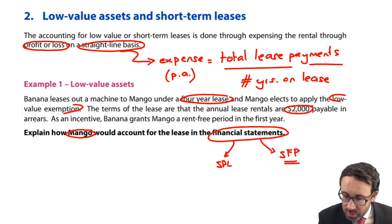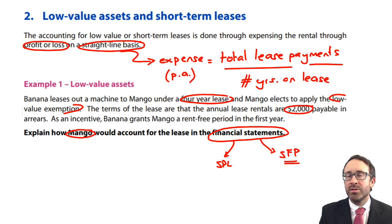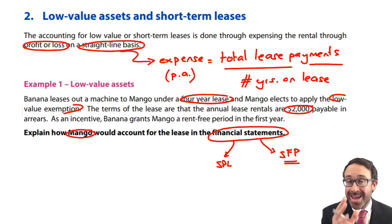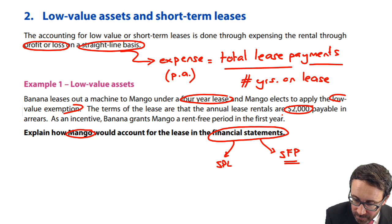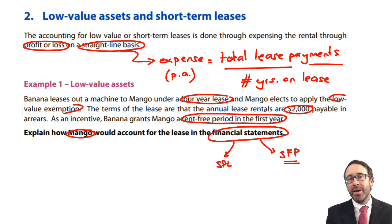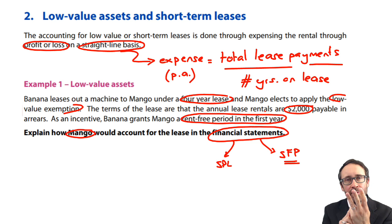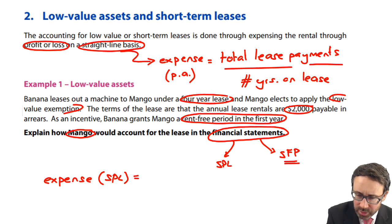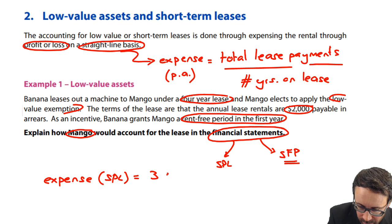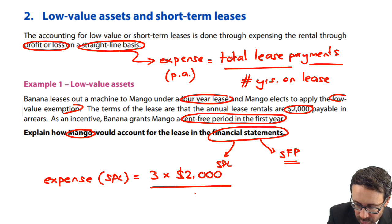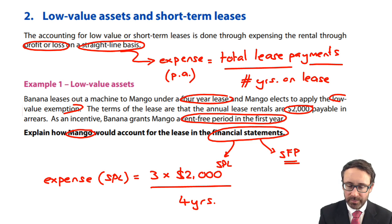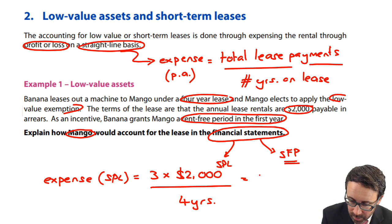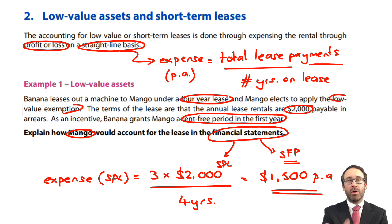The annual lease rentals are $2,000, payable in arrears. In this instance, it doesn't make too much difference whether payments are made in arrears or in advance. But the key point in this question is that we've got a rent-free period in the first year, so out of the four years of the lease, we're only making three payments. Therefore, working out my expense per annum: three lots of $2,000 divided by four years — $6,000 divided by four — gives $1,500 per annum that goes through the statement of profit or loss.